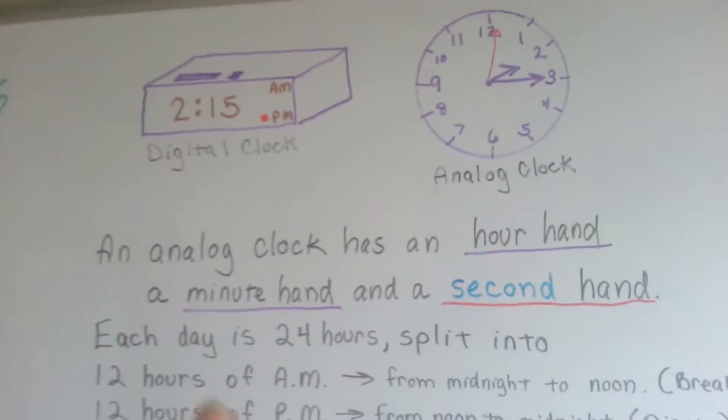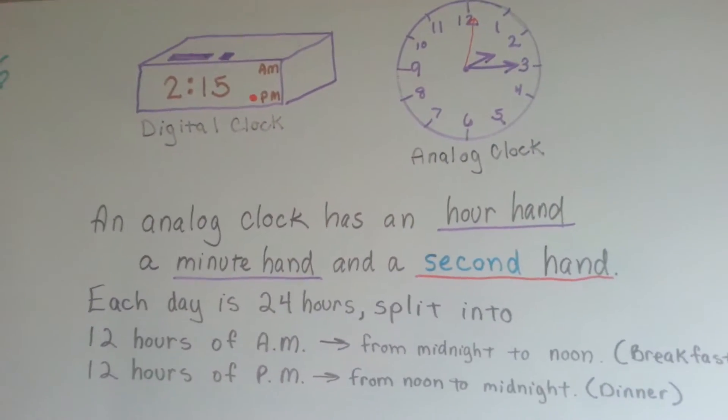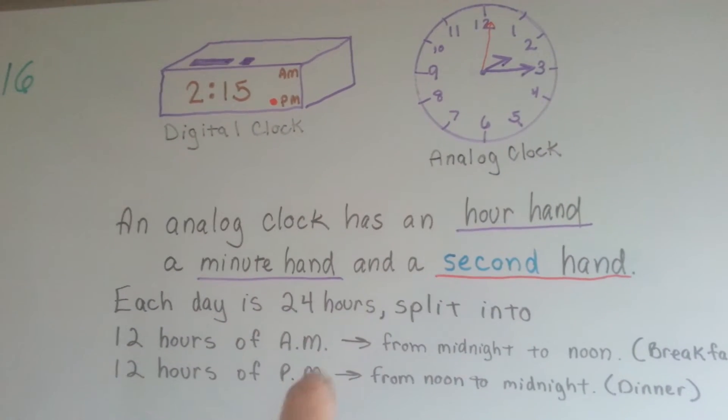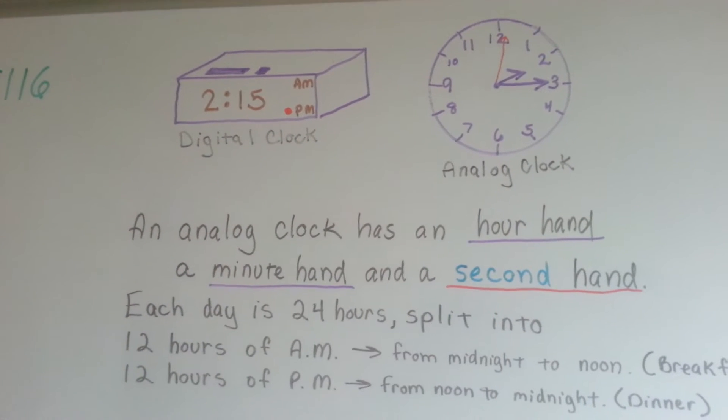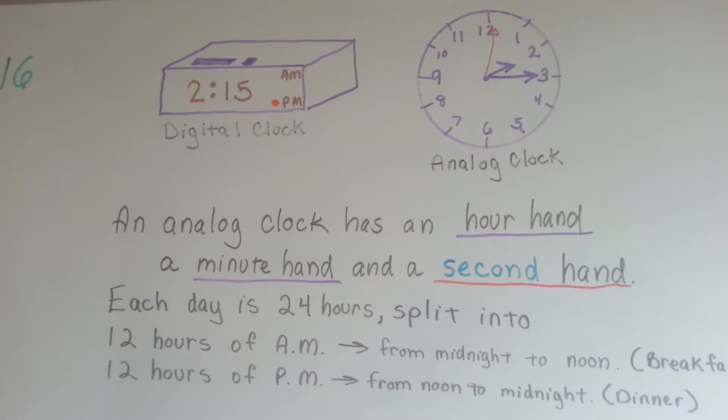An analog clock has an hour hand, the short one, a minute hand, the long one, and a second hand. It's usually a very skinny one. Sometimes it's red, sometimes it's black.